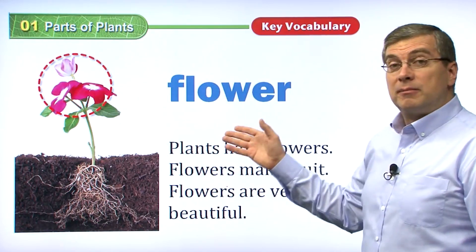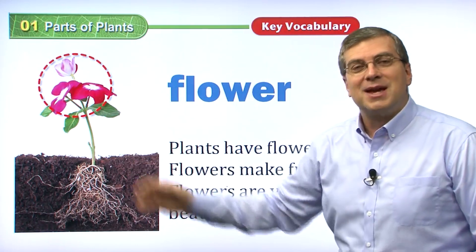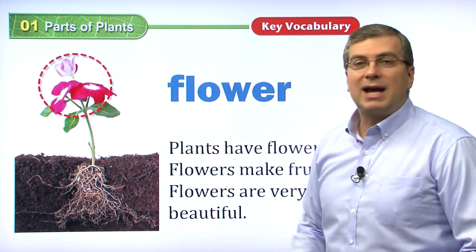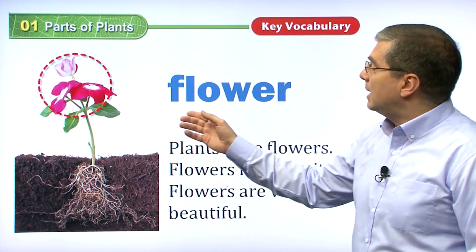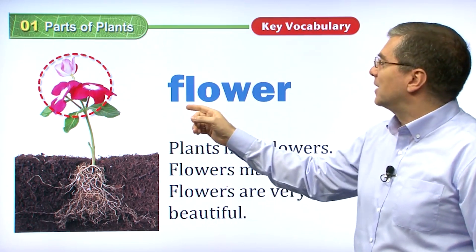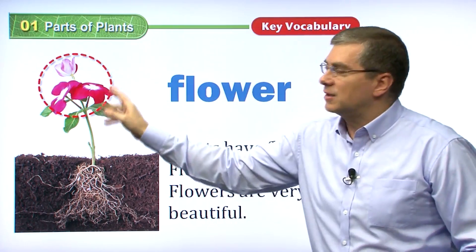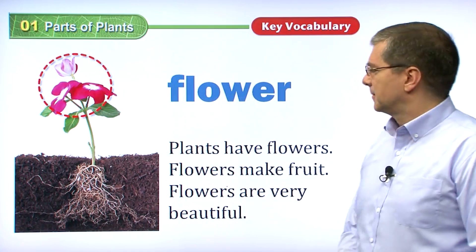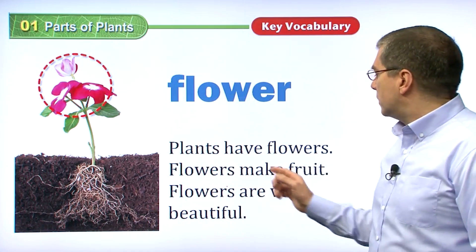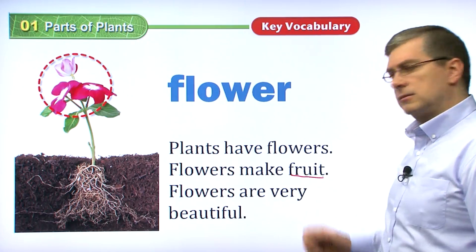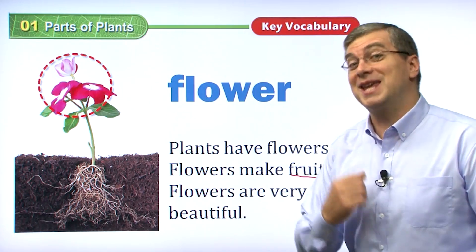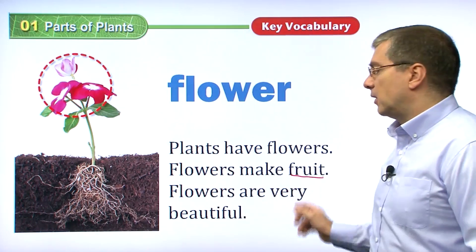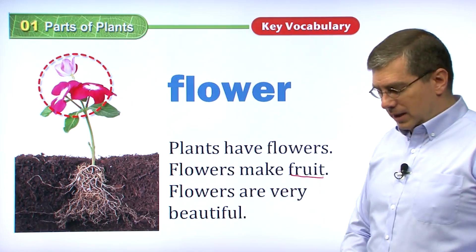Some plants are very beautiful. In the springtime you can see many different colors — these colors are made by flowers. Many plants and trees have flowers that can be many different colors. What do flowers do for the plant? Flowers make fruit. We eat the fruit, but what does the fruit do for the plant? We'll find out soon.